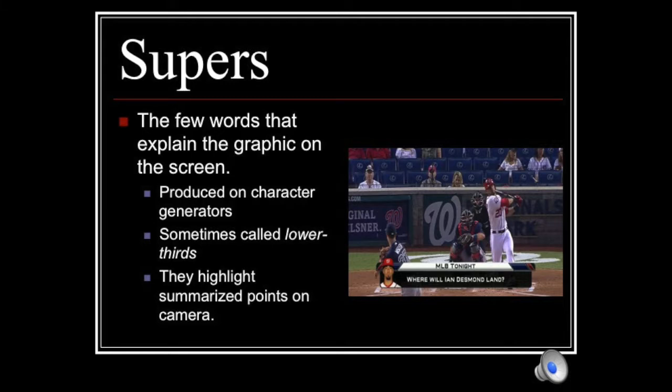Lower-thirds identify people, give locations, exact addresses, times, and whether or not something is live, and they are used to highlight summarized points being made on camera. But supers also refer to the station bug you might see in the lower or upper corner of the screen, or the box you often see on the left side of the screen on SportsCenter where they tease upcoming stories in that segment. Over-the-shoulders are also often used as supers.